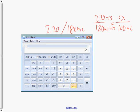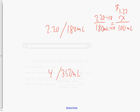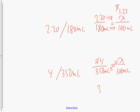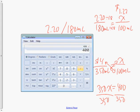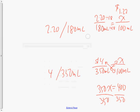Dividing $2.20 by 1.8 gives approximately $1.22 per 100 mL. For the second example, using the algebraic method: $4.00 for 350 mL, how much for 100 mL? Multiplying across gives 350x equals 400. Dividing both sides by 350 and using a calculator gives roughly $1.14 per 100 mL, so the better deal is the second one.